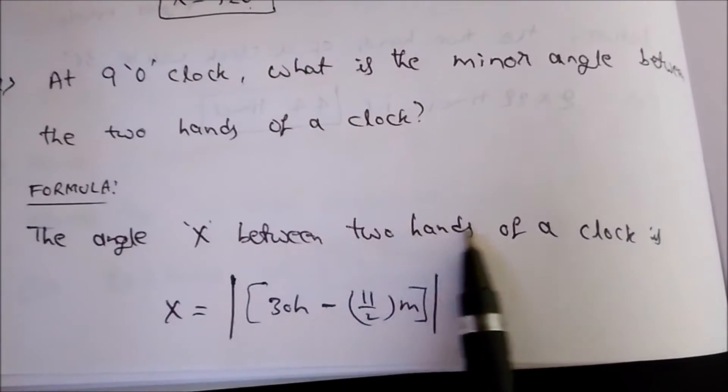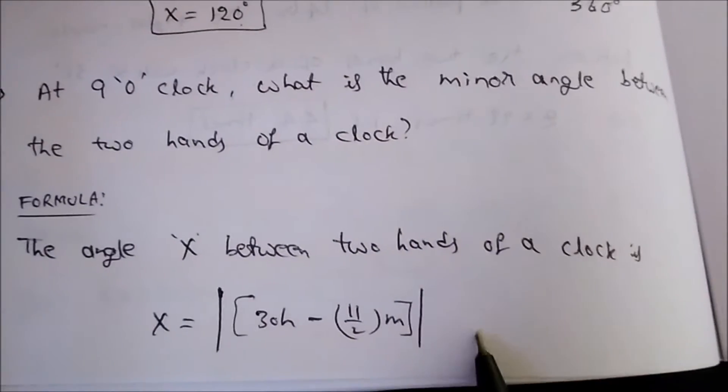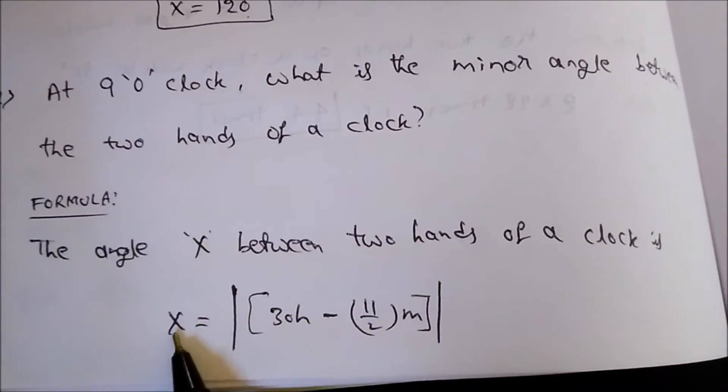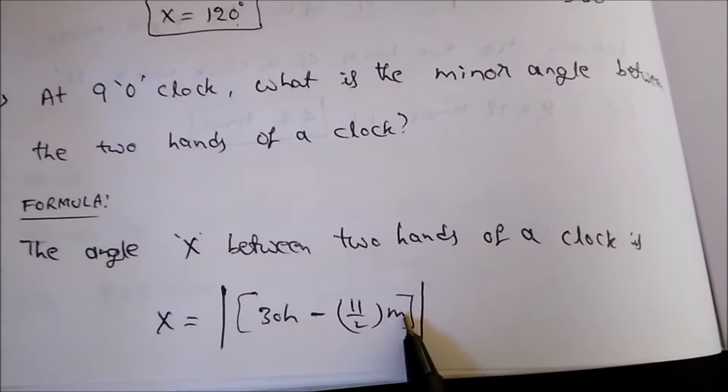The angle X between the two hands of a clock is X equals 30H minus 11 by 2 M, modulus. Here X represents the angle between the two hands, H represents the hour, M represents the minutes.